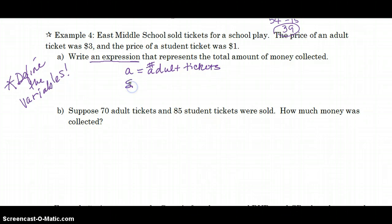And, I'm going to let S, which is always tricky. I like to put a little curl on my S so it doesn't look like a 5, stand for the number of student tickets sold. So, at $3 a pop, 3 times A, 3 times each adult ticket sold plus however many student tickets were sold. They're $1 each. This would be my algebraic expression. 3A plus 1S.